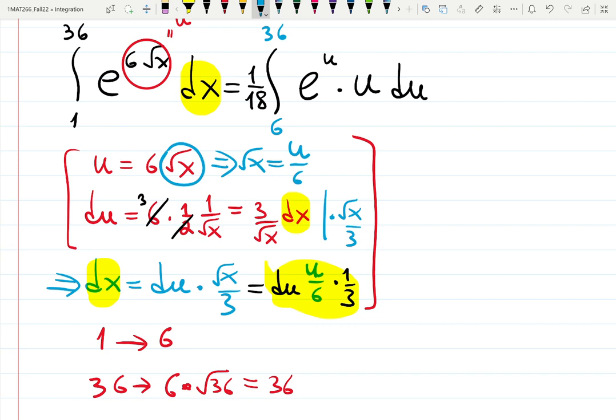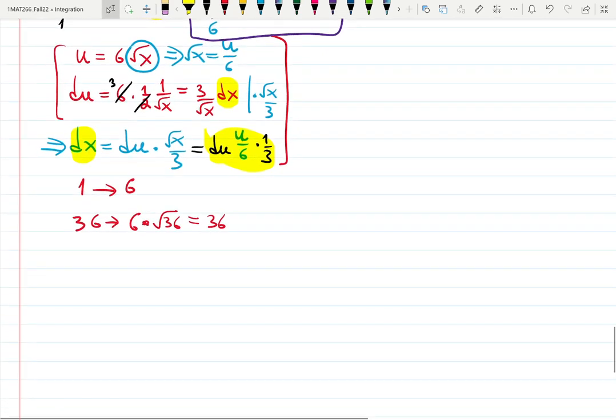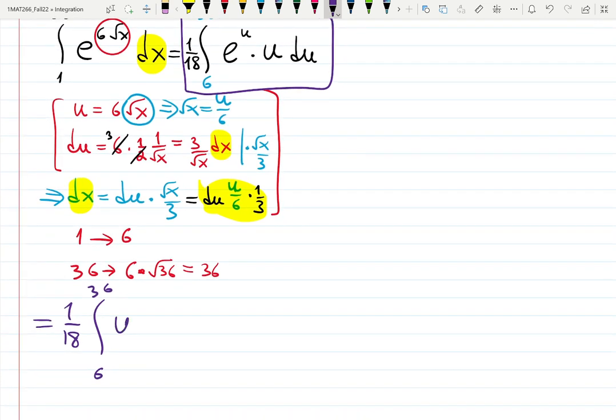What do you think? We kind of made the integral harder, but this one can be done using integration by parts—that's why it's so interesting. So this integral, let me write it down separately: this is a definite integral, 1 over 18 from 6 to 36, it will be u times e to the u du.